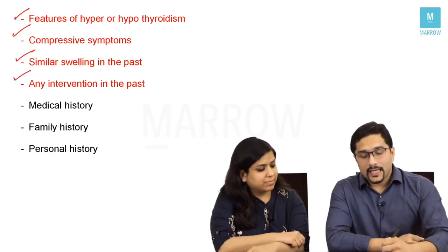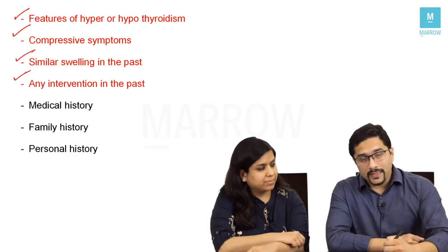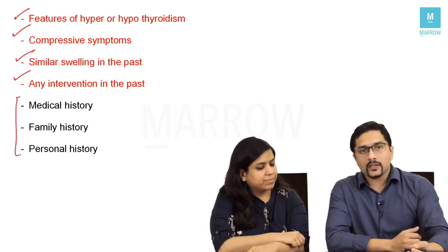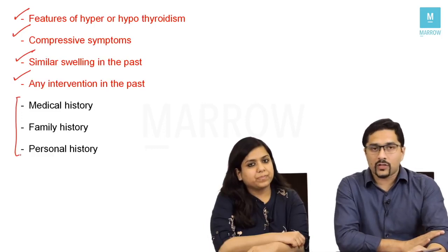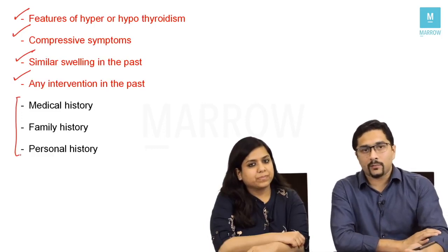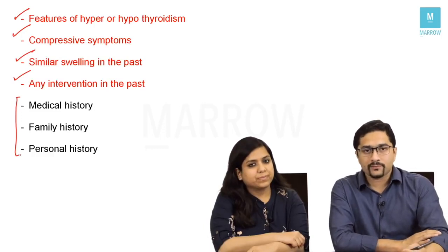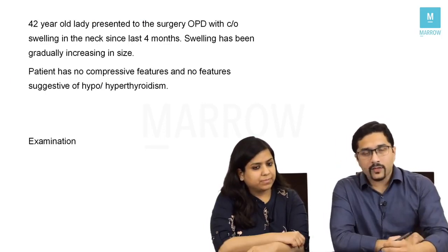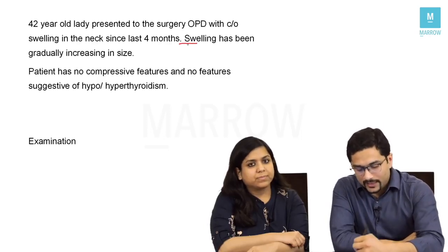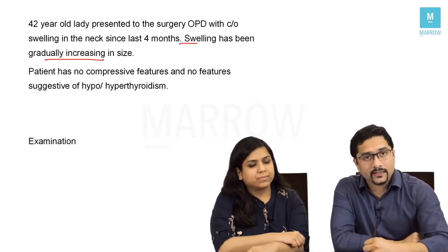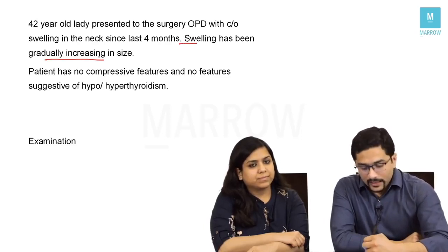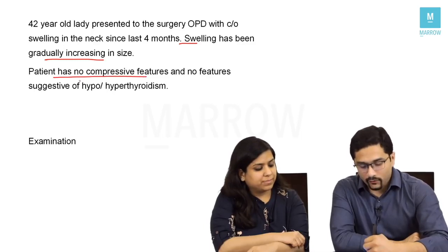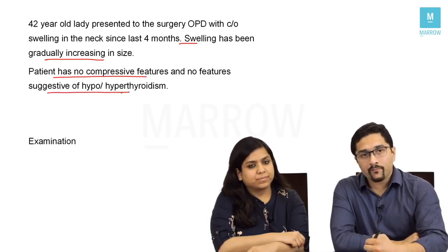You will also ask about similar swelling in the past, any treatment or intervention taken for this, and to complete your history — family history, medical history, and personal history. After taking all this, we have found that the swelling has been gradually increasing in size, there are no compressive features, and no features suggestive of hypo or hyperthyroidism.